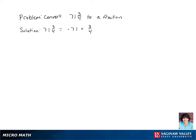Now we're just going to do the same operations as we normally would to add fractions. Let's get a common denominator. We're going to multiply 71 by 4 over 4 and we're going to get 284 over 4 plus 3 fourths, and our final answer will be 287 over 4.